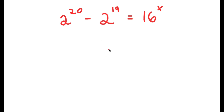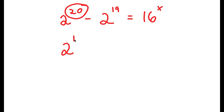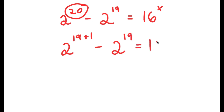In this problem, I have 2 to the power of 20 minus 2 to the power of 19 is equal to 16 to the power of x. I'm going to first start by rewriting 20 as 19 plus 1. So now I have 2 to the power of 19 plus 1 minus 2 to the power of 19 is equal to 16 to the power of x.